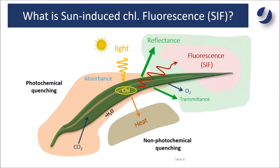From the incoming light from the sun to the vegetation, some of it is reflected, some of it is transmitted, and some other portion is absorbed by the vegetation. From this absorbed light, a part is used for photosynthesis — also known as photochemical quenching in this research area. Some other part of the absorbed energy is dissipated as heat, and another part is re-emitted as fluorescence, which is again a low-intensity red signal.